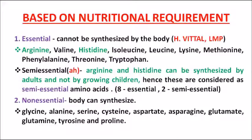Arginine and histidine are not synthesized in children but are synthesized in adults, so they are called semi-essential amino acids. The remaining eight amino acids are the true essential amino acids. For MCQ purposes: there are 8 essential amino acids, 2 semi-essential amino acids (arginine and histidine), and the rest are non-essential amino acids.